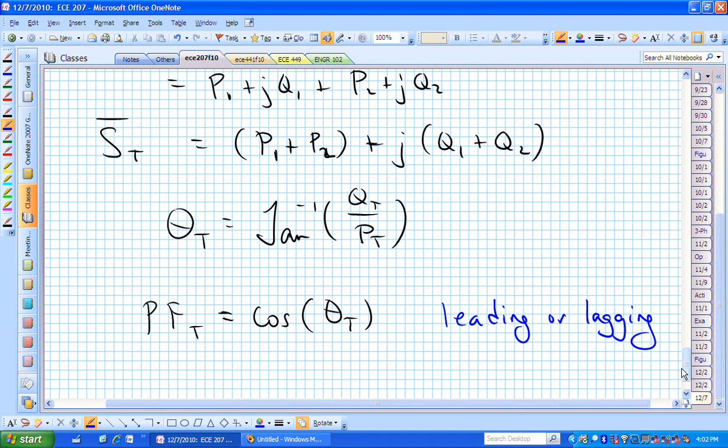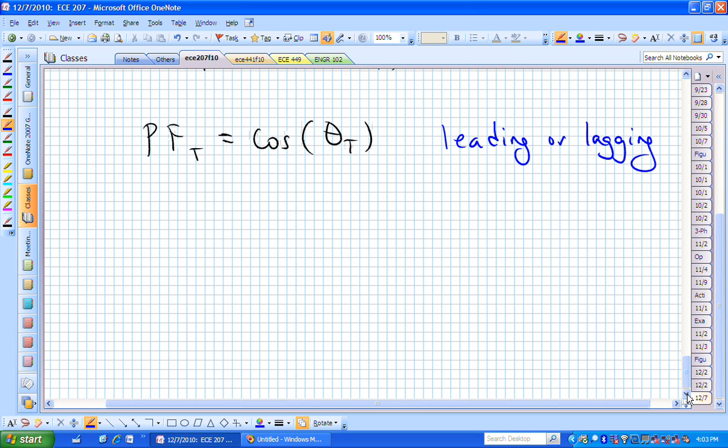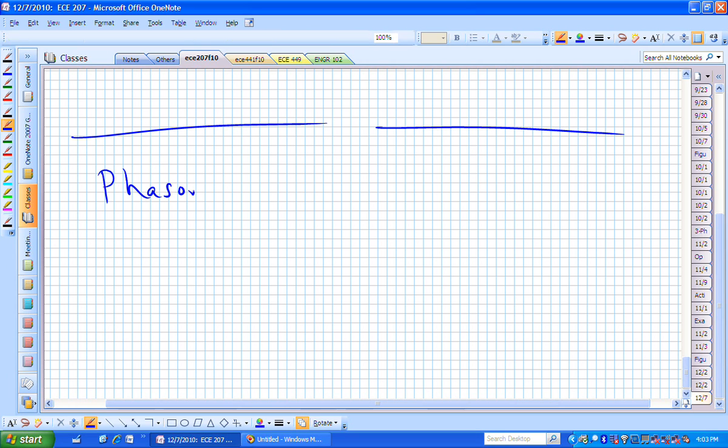Down is leading, up is lagging. That's just one way to solve it. You could have solved it other ways. You could have found the currents, and then you just need to know the relationship between the voltage phasor and the current phasor. Are there questions on that problem? How about we look at phasor circuits.